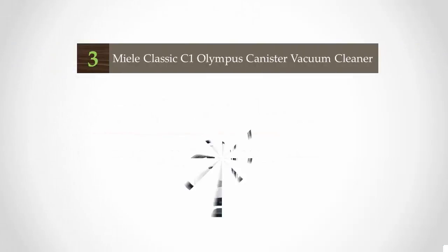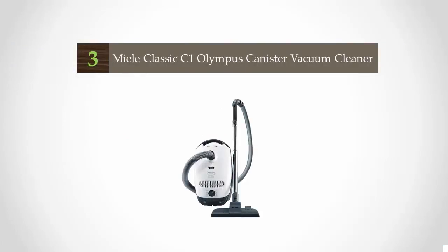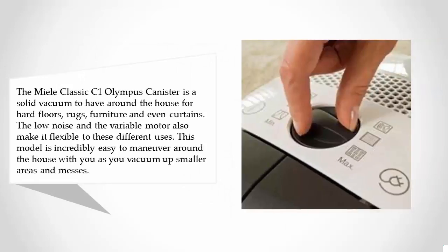Halfway through our list at number 3, the Miele Classic C1 Olympus Canister is a solid vacuum to have around the house for hard floors, rugs, furniture, and even curtains. The low noise and the variable motor also make it flexible to these different uses.